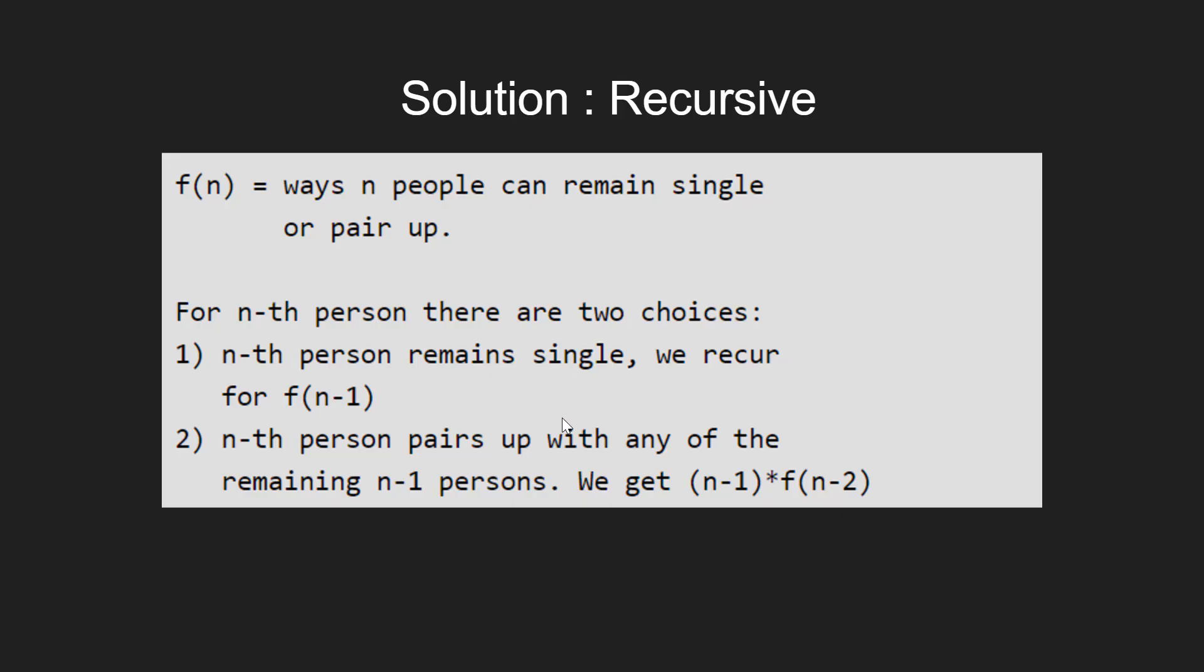If the person pairs up, we have n-1 possible options for pairing. The count then depends on n-2 people, meaning the current person and the one they paired with are removed. In this case, we recur for f(n-2) and multiply it by n-1.